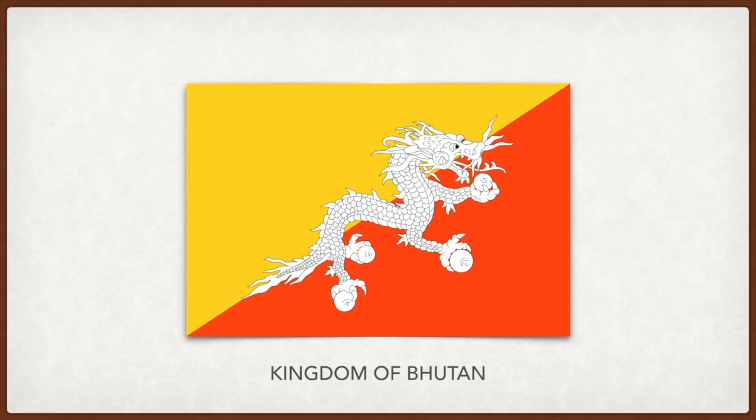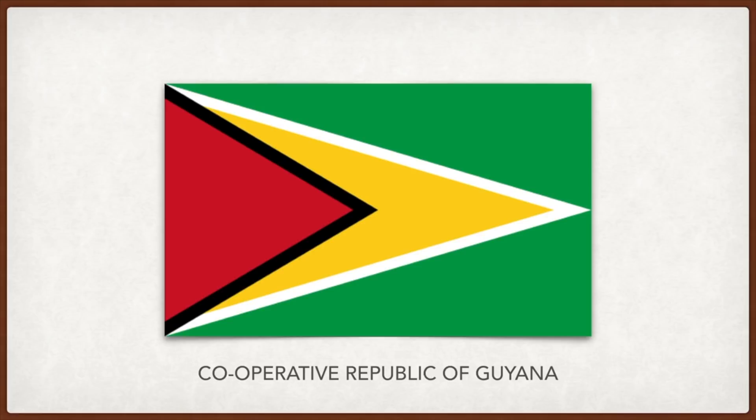Guyana: the green stands for the jungles and fields of the country, the white is for the rivers, the yellow arrowhead is for the original natives but also the golden future, the black represents perseverance, and red represents zeal and sacrifice in nation building. Macau: the lotus in the center represents Macau; beneath it is a bridge symbolic of the Governor Nobre de Carvalho Bridge linking the Macau peninsula and the island of Taipa.